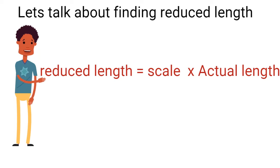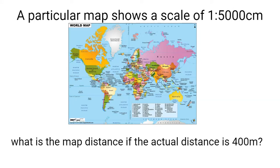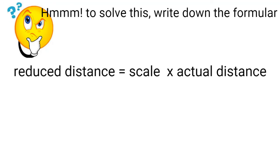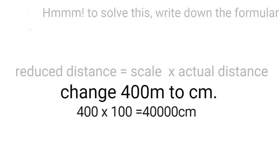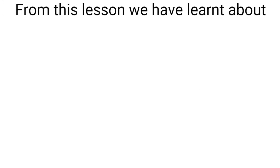A particular map shows a scale of 1 ratio 500 centimeters. What is the map distance if the actual distance is 400 meters? The scale is 1 ratio 500 centimeters and the actual distance is 400 meters. We are looking for the reduced distance. First, write the formula: reduced distance equals scale times actual distance. Next, convert meters to centimeters: 400 meters times 100 gives 40,000 centimeters. Multiplying by the scale, the three zeros cancel, giving us 80 centimeters.